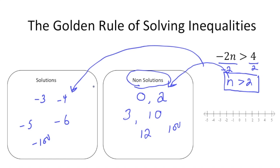Here's the golden rule: what you have to do is flip the sign. Anytime you multiply or divide by a negative, you have to flip the sign or it's not going to work. So let's go back and flip the sign — instead of greater than, it's going to be less than 2. When we graph it, we're going to have an open circle, and all the values to the left of 2 are going to work.